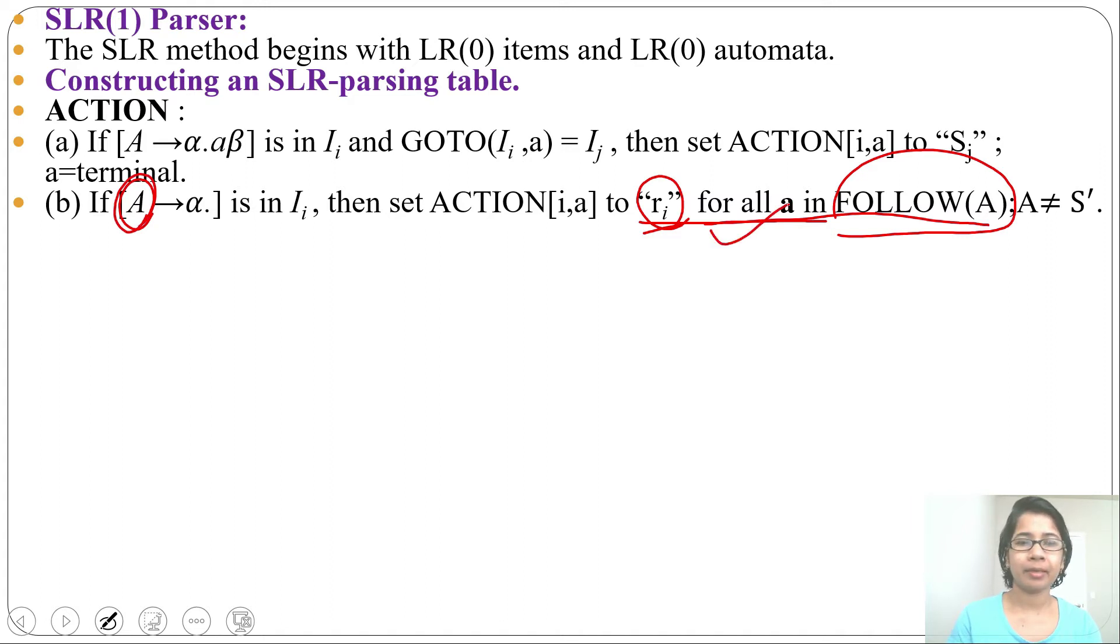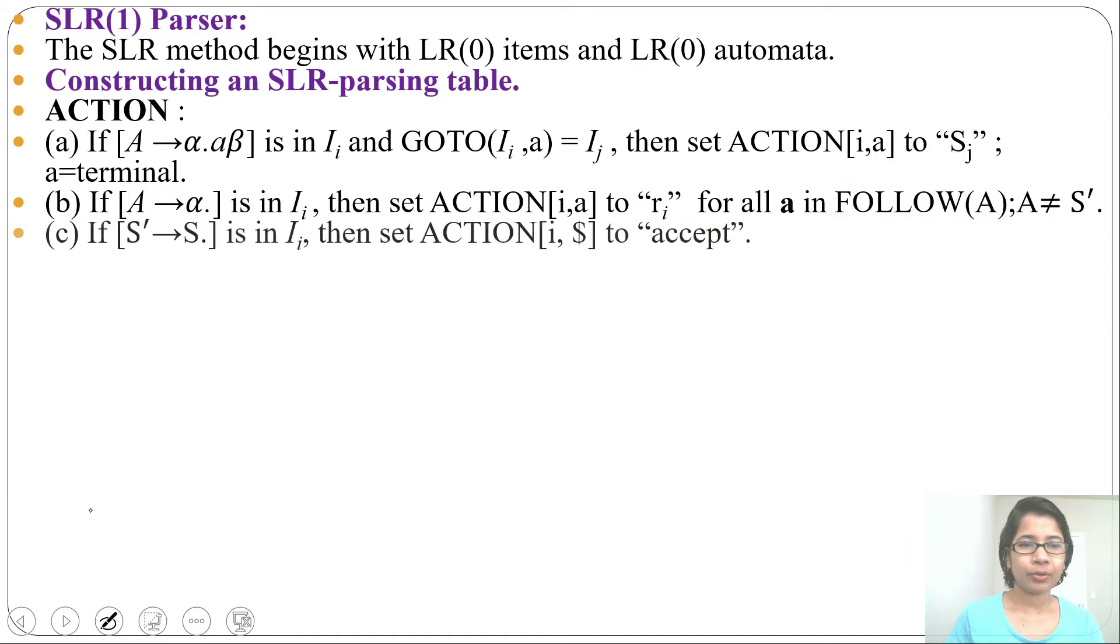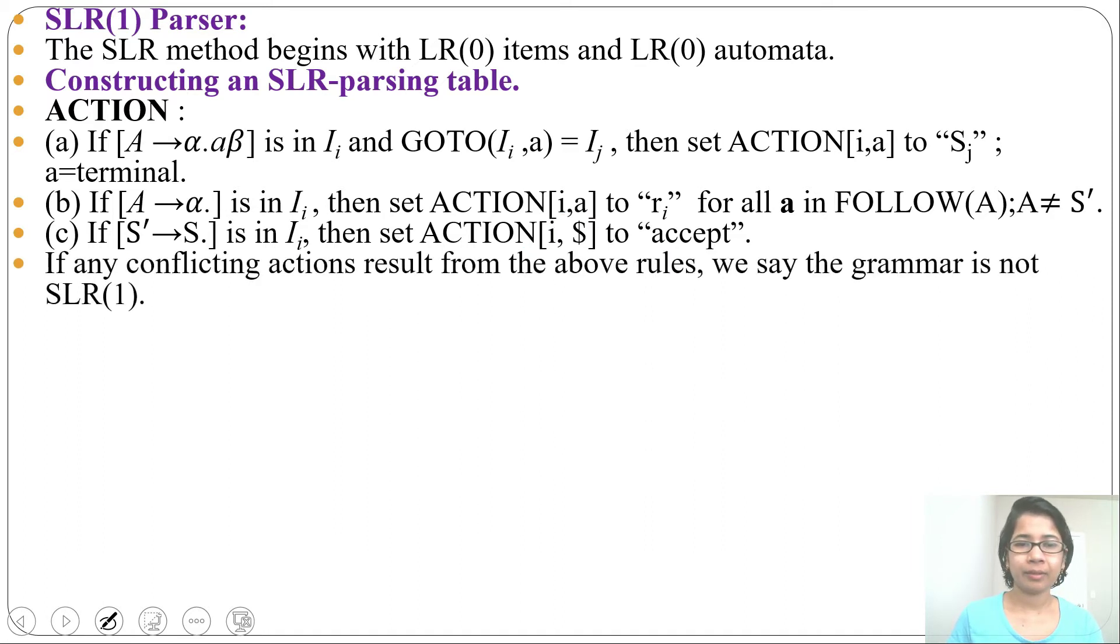And we'll write that reduction in FOLLOW of LHS side variable. So this is different from LR(0) parsing table. We need to keep reduction in FOLLOW of LHS variable. Next rule: if [S'→S·] is in Ii, then set ACTION[i,$] to "accept". It is same as LR(0). If any conflicting actions result from the above rules, then we'll say the grammar is not SLR(1).